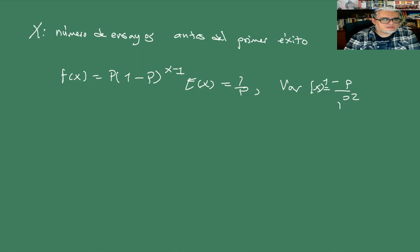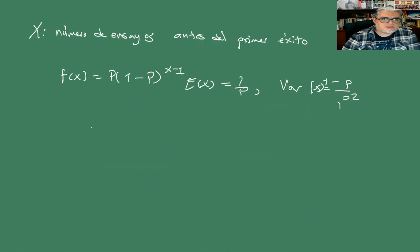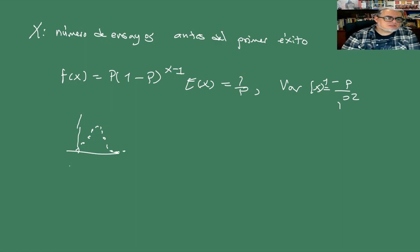También podríamos describir el número de ensayos —no de fracasos— antes del primer éxito. En ese caso nuestra f(x) sería p por 1 menos p a la x menos 1, la esperanza sería 1 sobre p, y la varianza es la misma: 1 menos p sobre p cuadrado. La geométrica tiene una gráfica que se va apachurrando, y la binomial es una campana que también luego se apachurra.